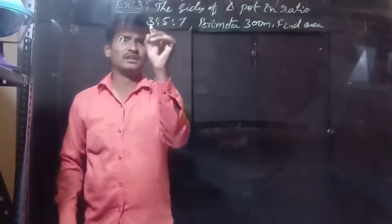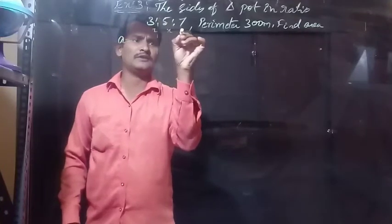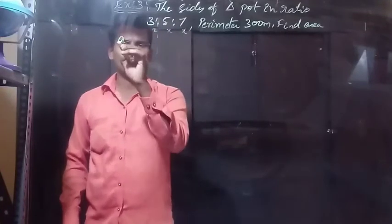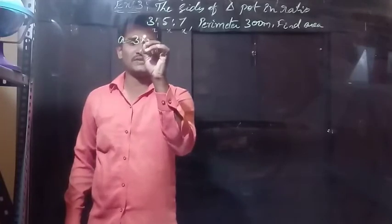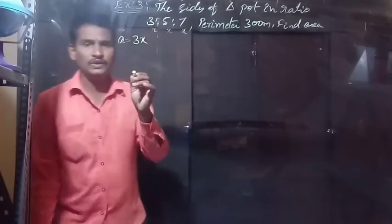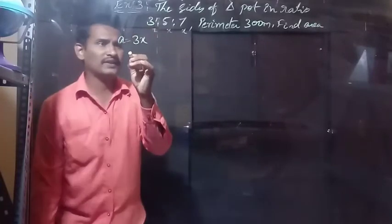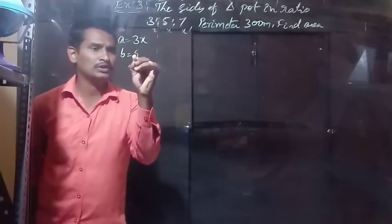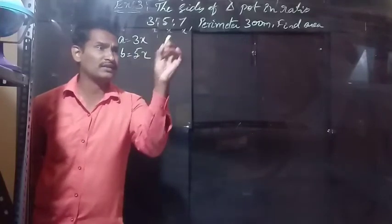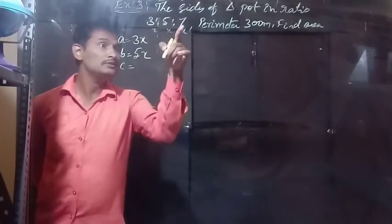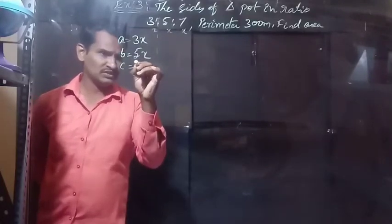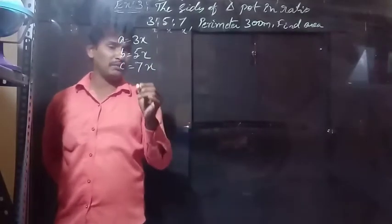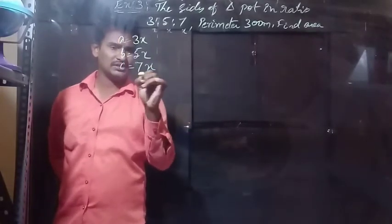Here we have x as the common factor. So the first side is 3x, the second side is 5x, and the third side is 7x.